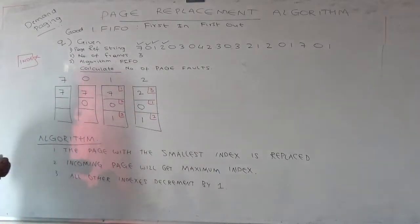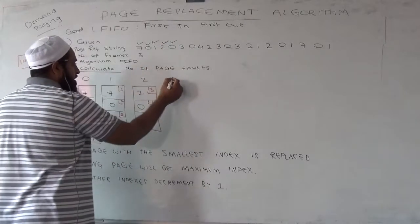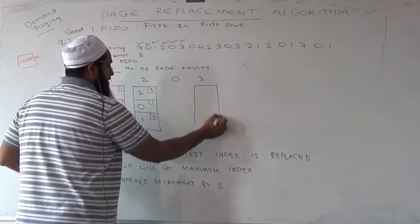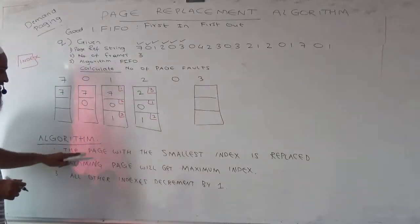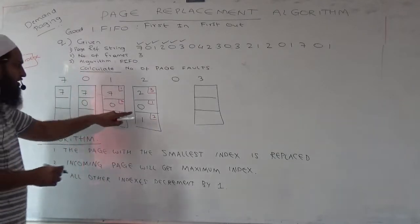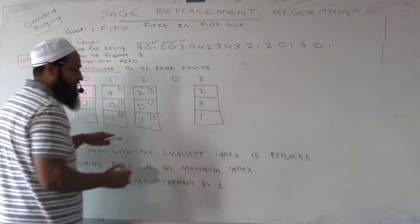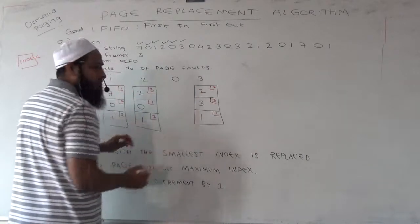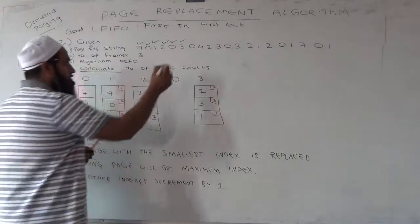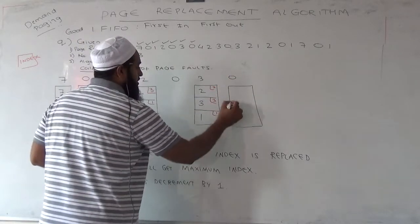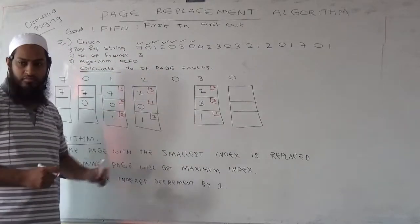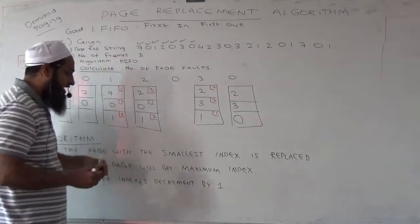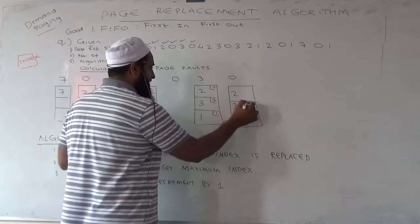Clear? Next: is 0 already in memory? Move forward, don't do anything. Next, who's coming? 3. Now who should go out? Same rule — the page with the smallest index. That is 0, so 0 goes out. 3 replaces 0. Remaining numbers stay as they are. The index of 3 will become the maximum index, and the other indexes decrement by one. Next: is 0 in memory? Who will it replace? The smallest index — so 0 will replace 1. Remaining numbers as is, and the incoming page gets index 3, others decrement by one.